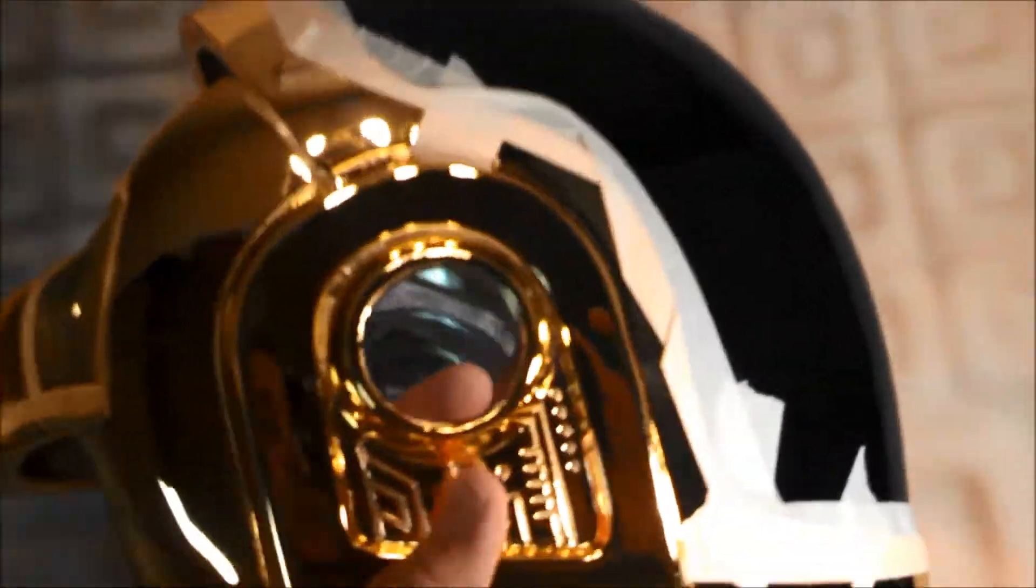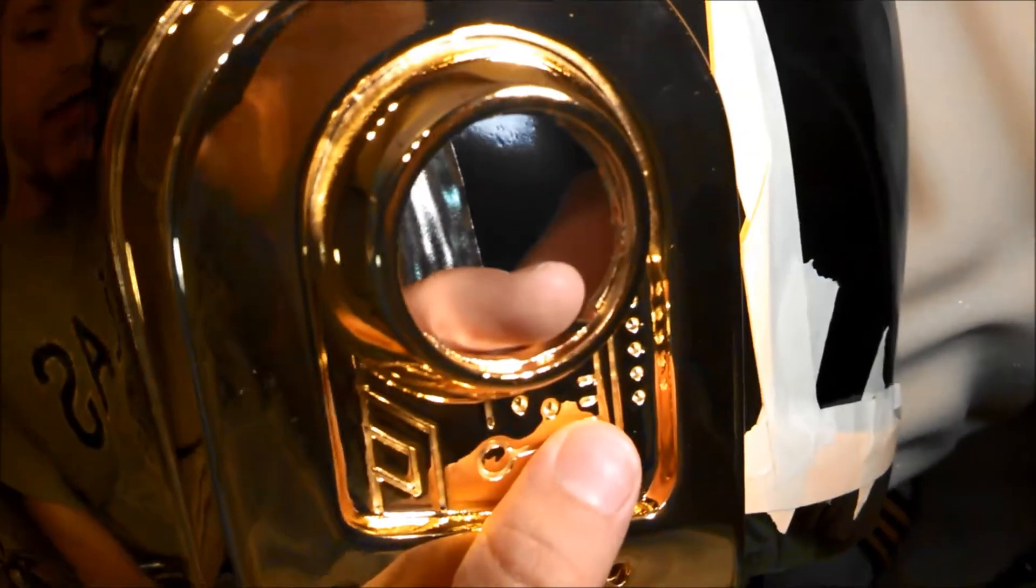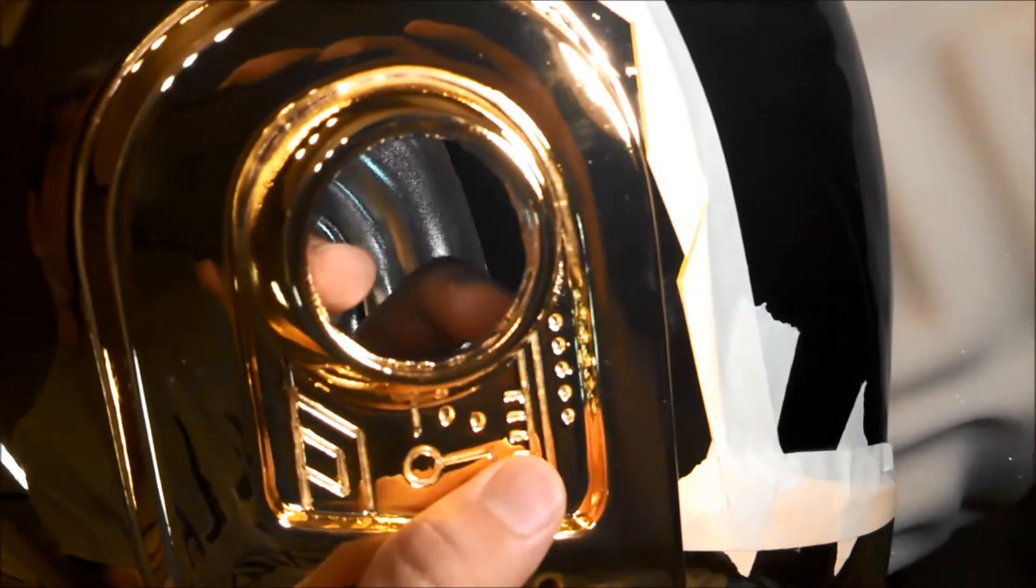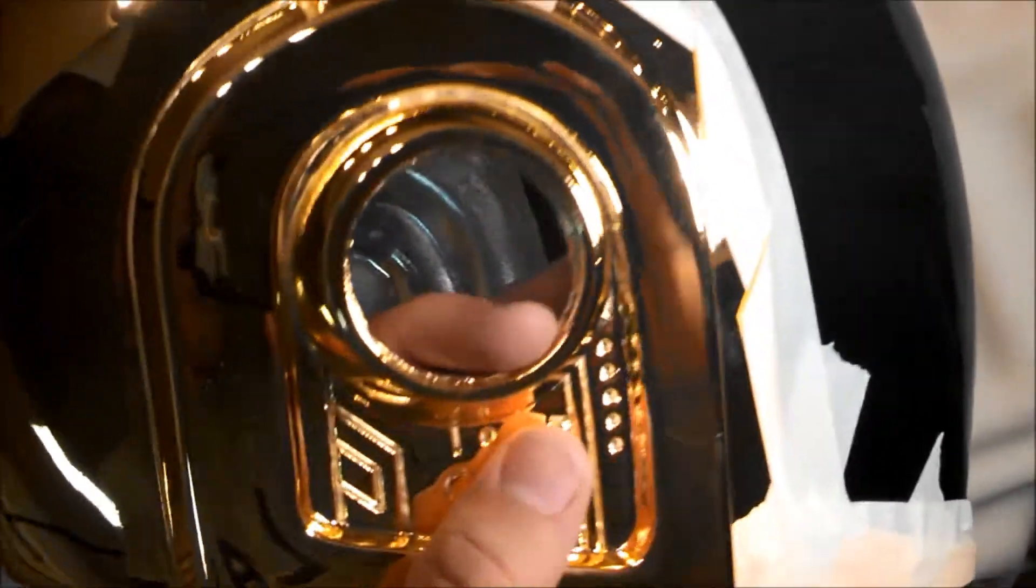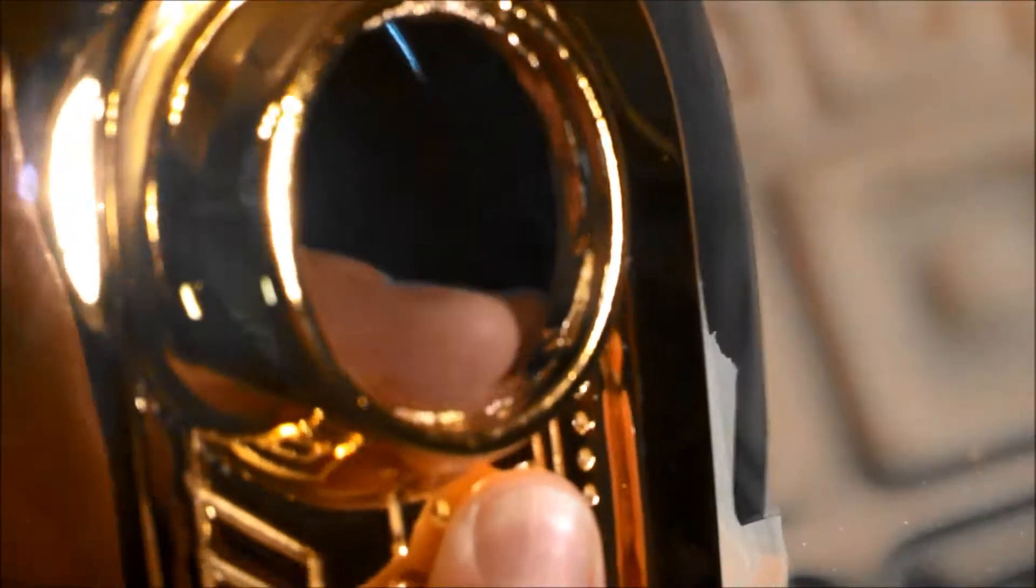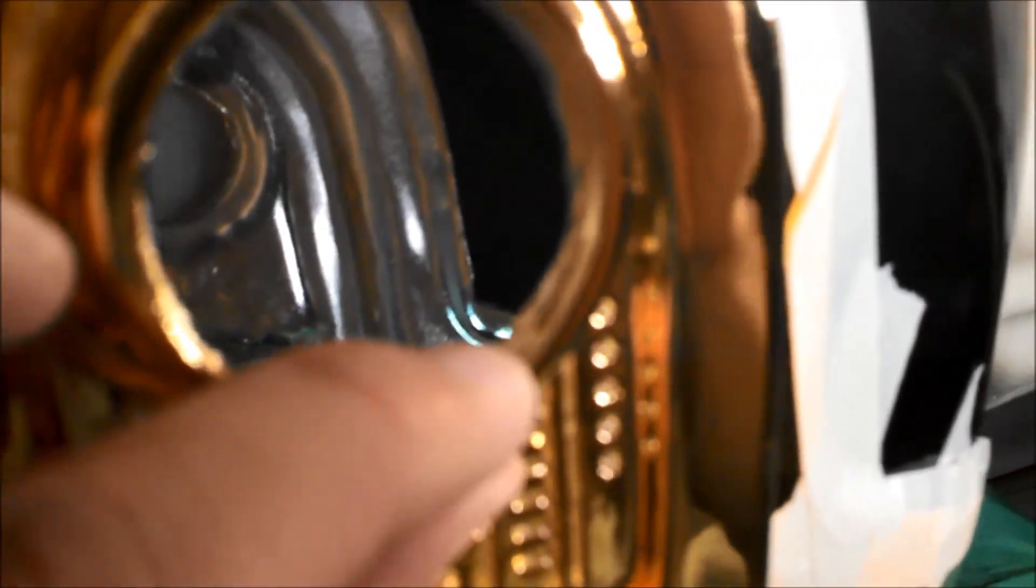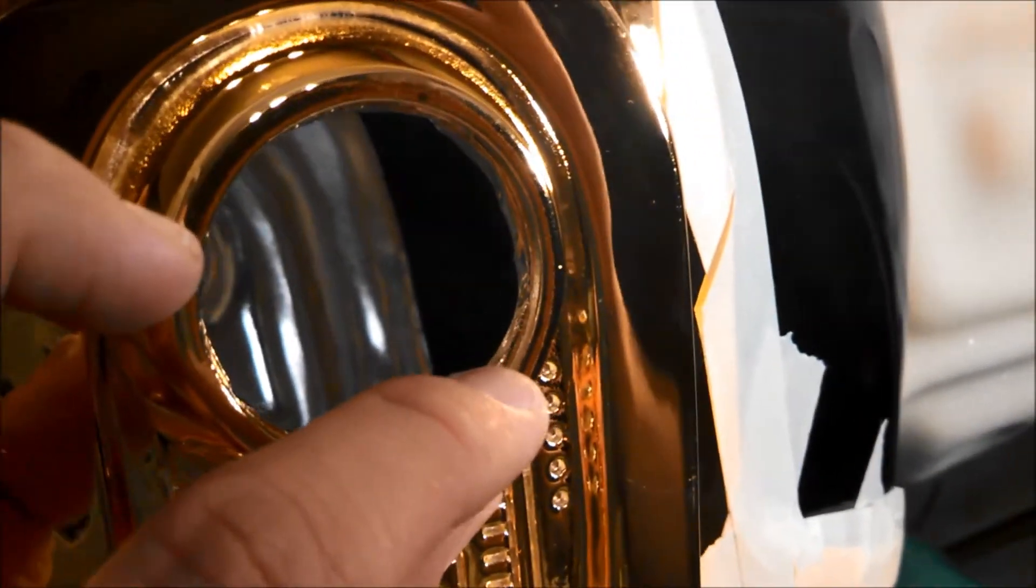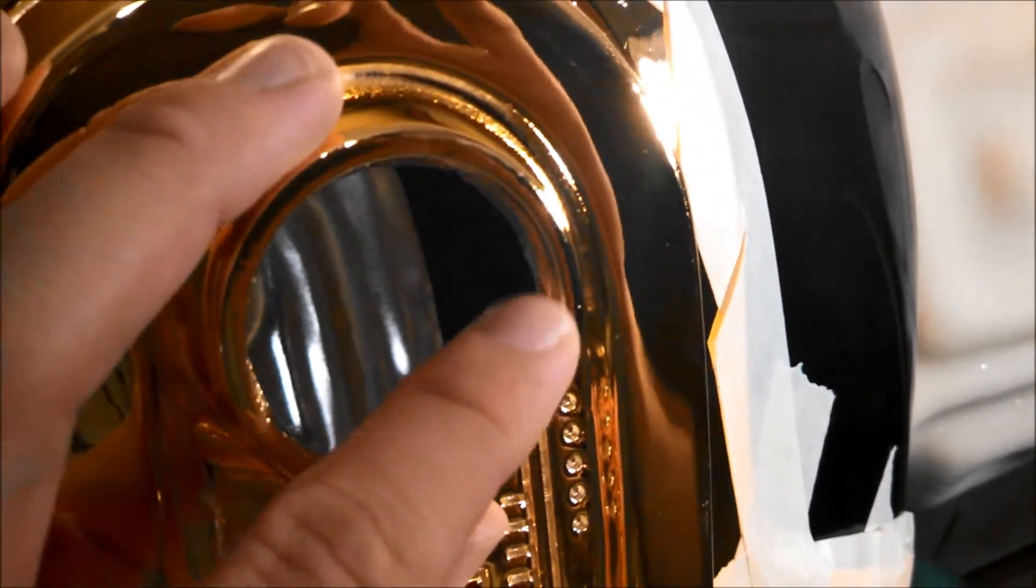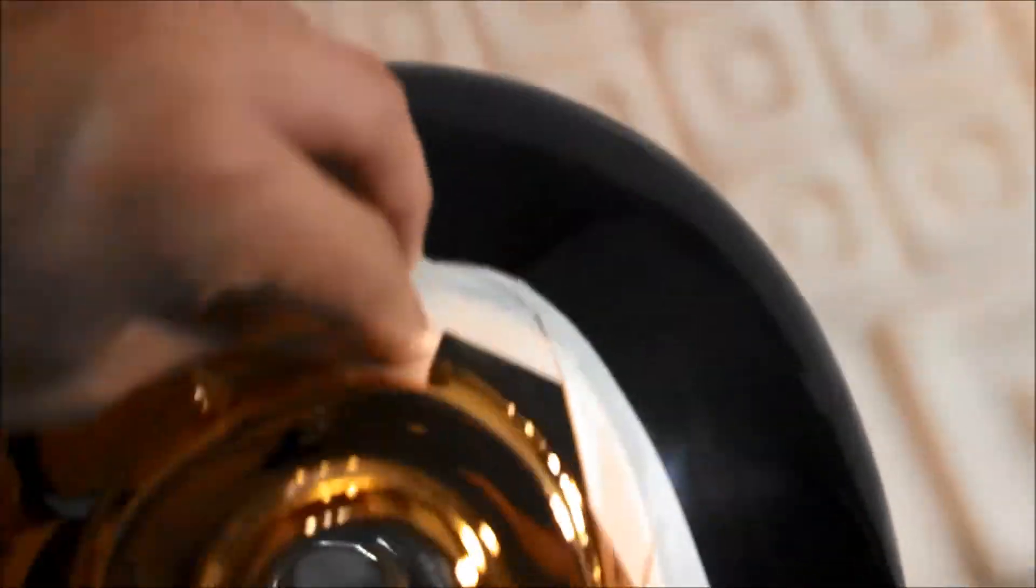So tip number one is if you are planning on doing the ears, you're planning on adding the EKG here, go ahead and paint the inside of this black. And then when you cut the little piece of plastic to mount it on there, you won't notice the difference between the gold and the black of the plastic because all of this will be black.